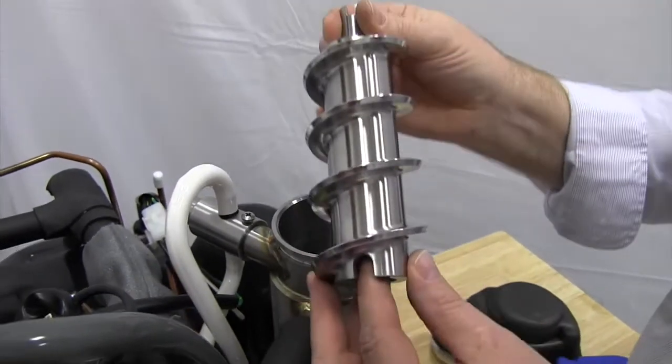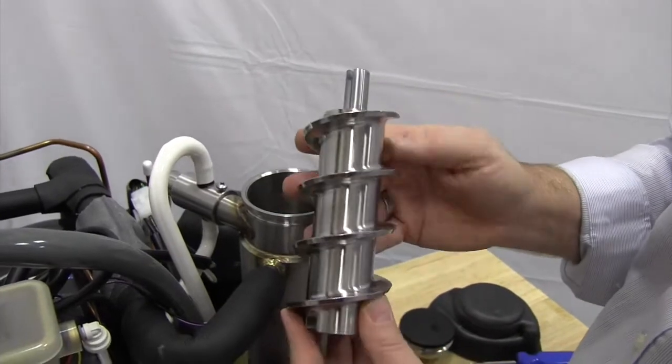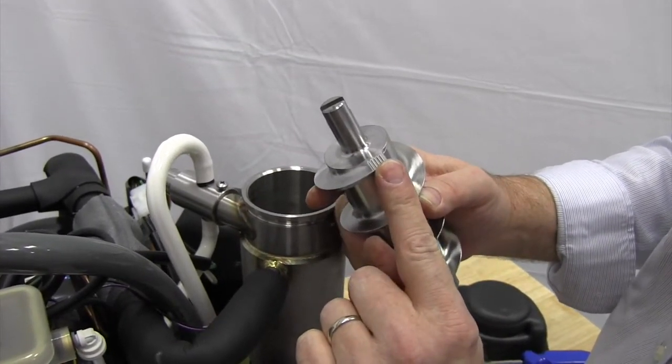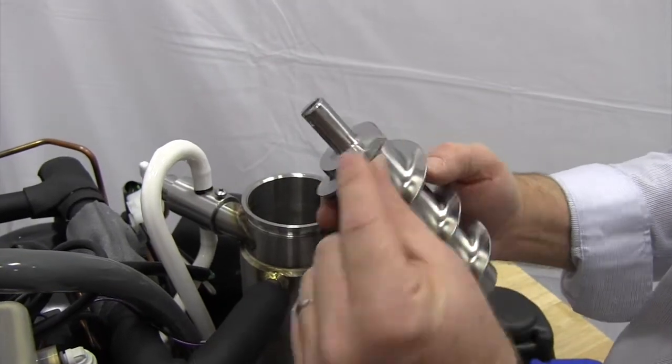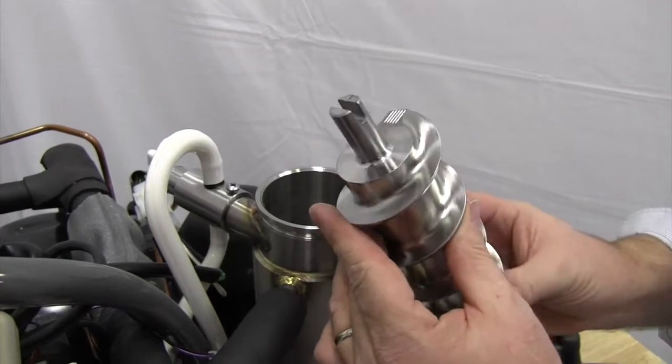So here's our auger. The auger is machined out of a single piece of 304 stainless steel. It has some little serrations up at the top here. What those serrations are for is it helps to give the ice a push, to push it out of the evaporator as it's turning around.